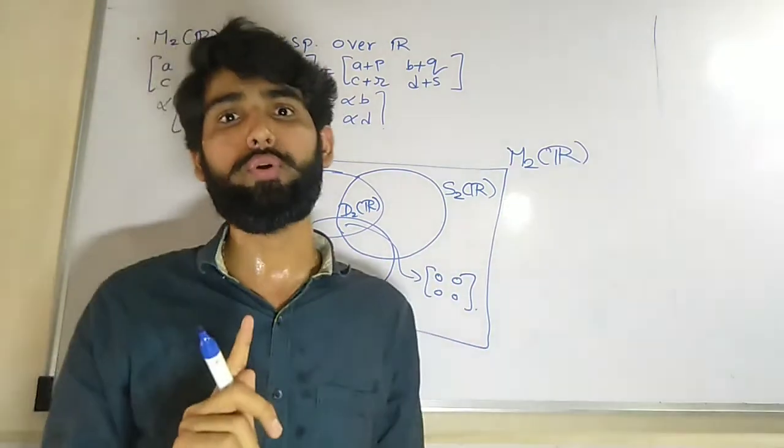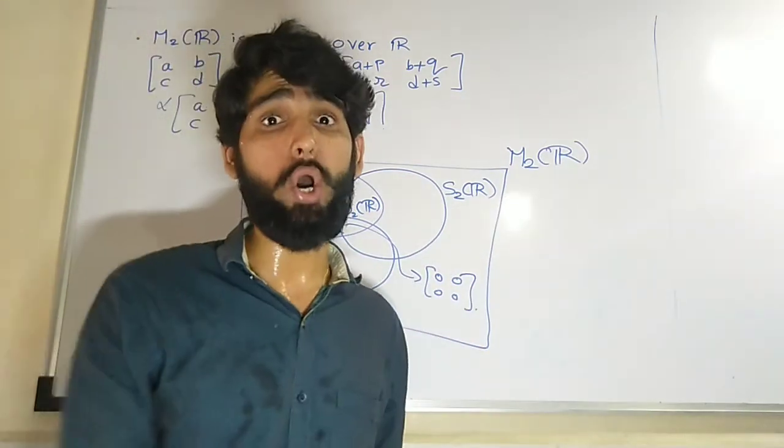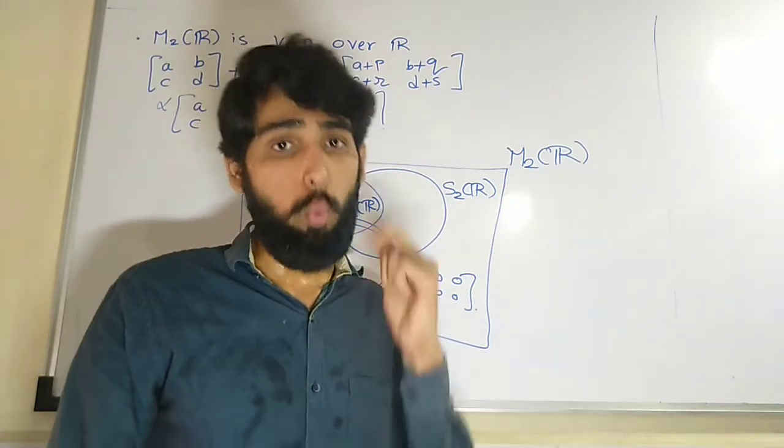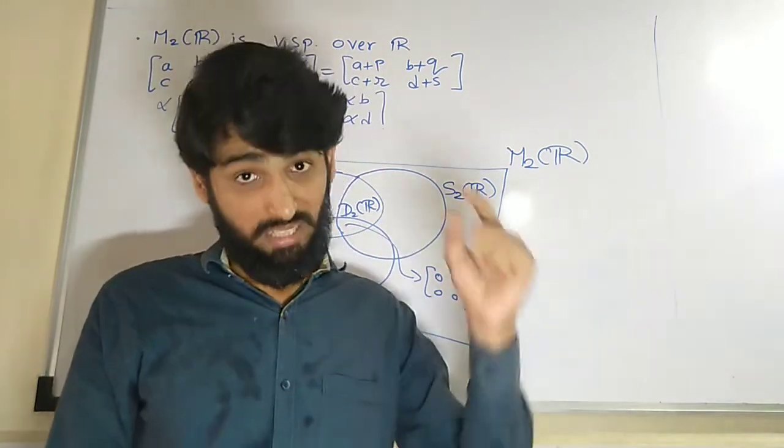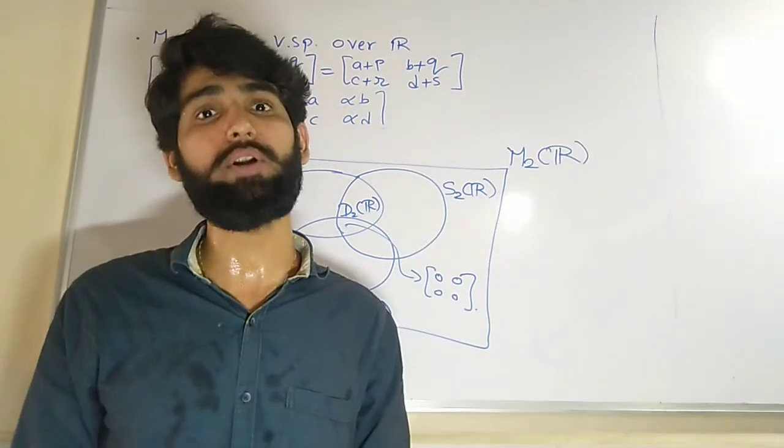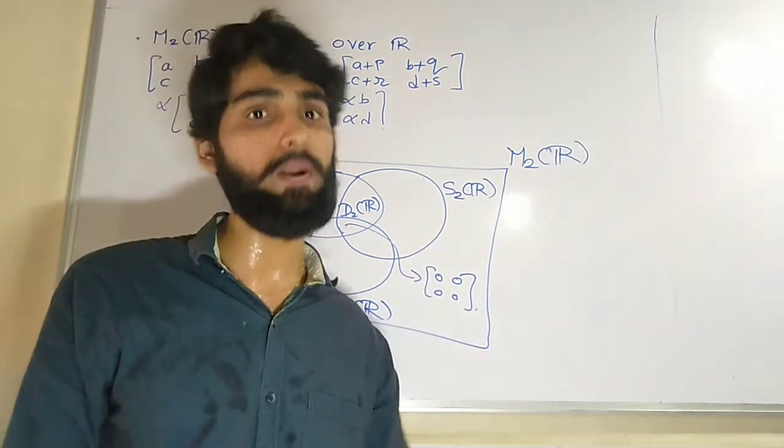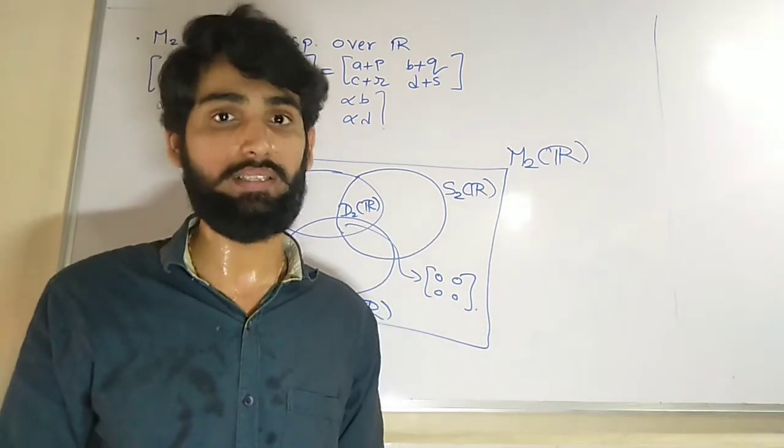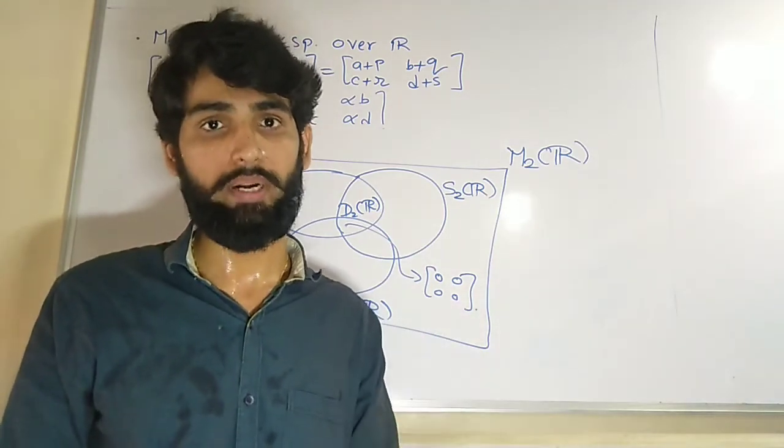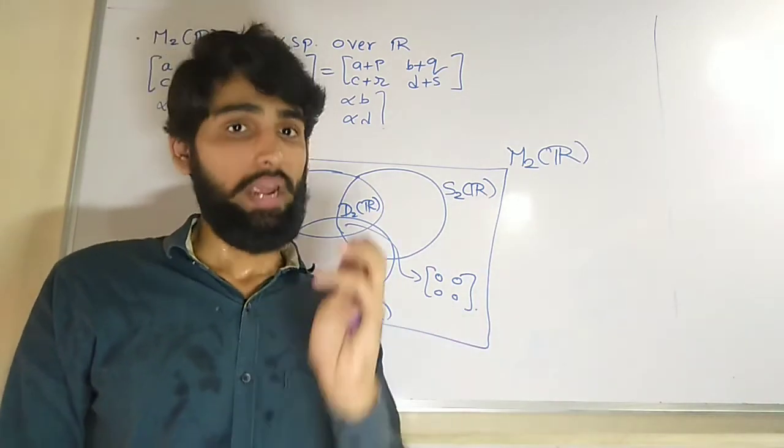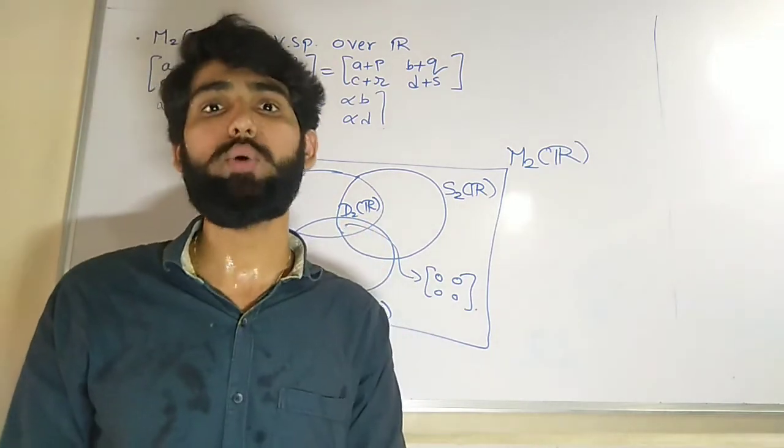So this is a simple note for you guys. Whenever you are talking about subspaces, one thing that you should make sure: zero element must be element of it, otherwise it cannot be a subspace. In the next example of a subspace, we will discuss this indeed about the zero element. But for now, you should remember, any subspace must have a zero element.